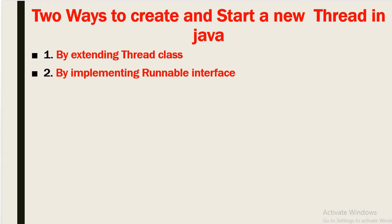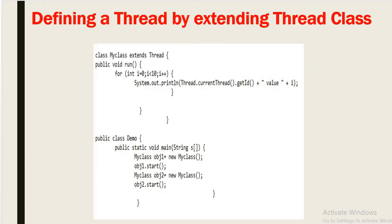We can create a thread in Java in two ways: first by extending the Thread class, and second by implementing the Runnable interface. In the first approach, we define a class that extends Thread, override the public void run() method, and then in the main method create an object of that class. When we call object.start(), it automatically creates a thread and that thread executes our run() method.